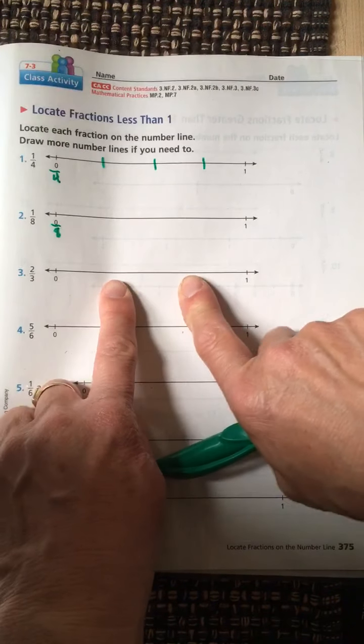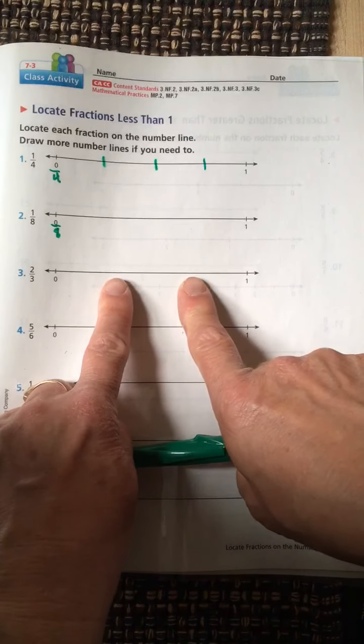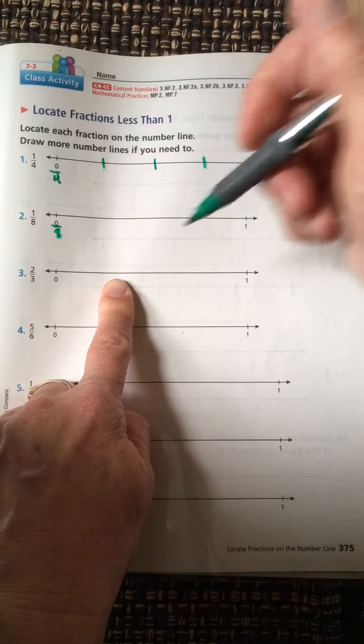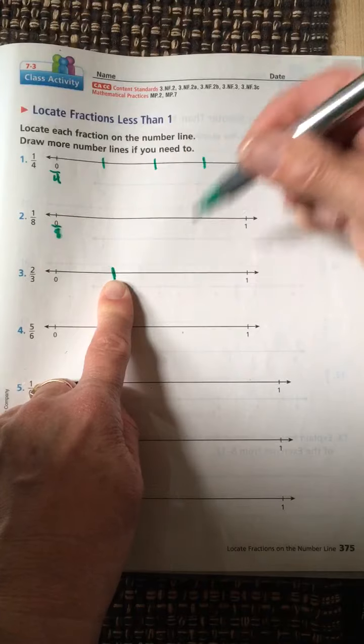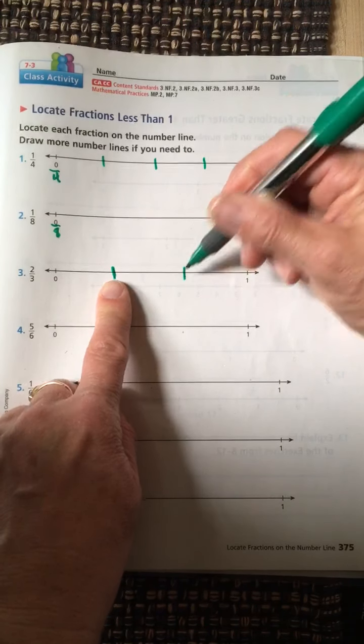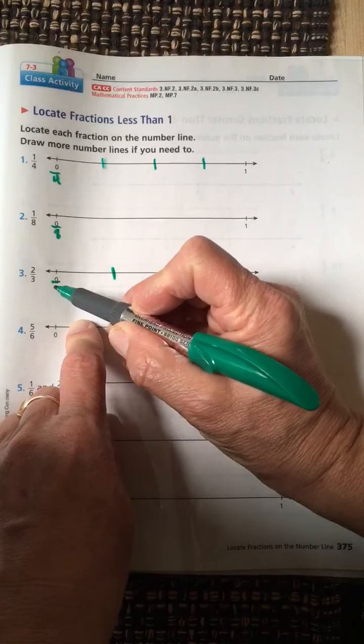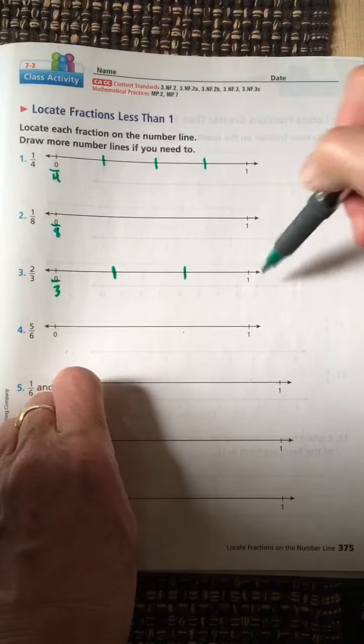For thirds, it's trickier. I taught you the magic finger trick. I have to make three equal sections. I just do the best I can. I'm not a machine, and then label it zero thirds, one third, two thirds, three thirds.